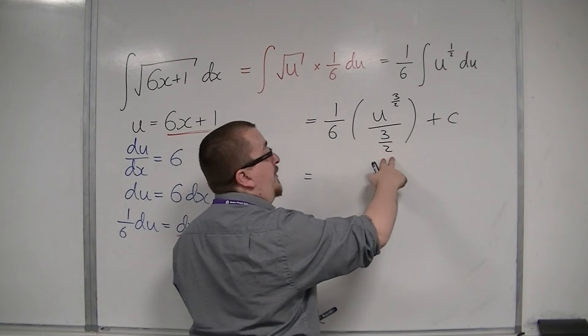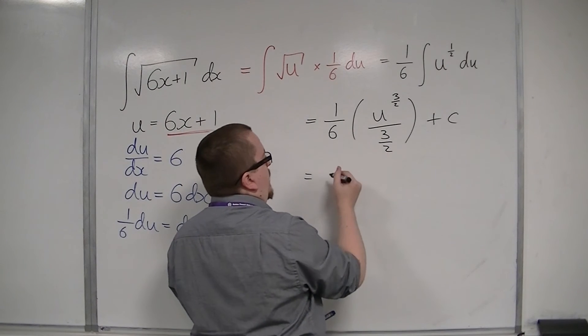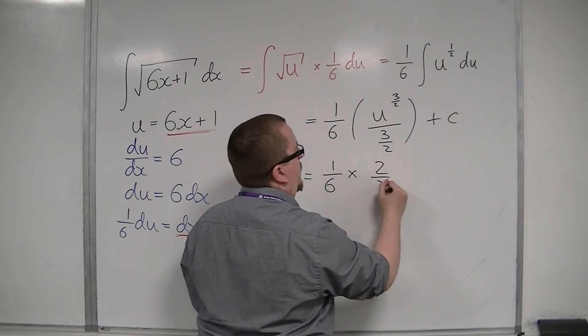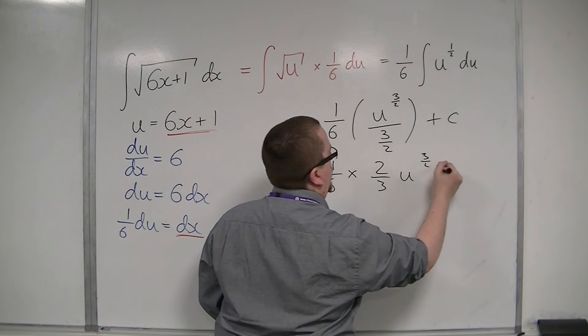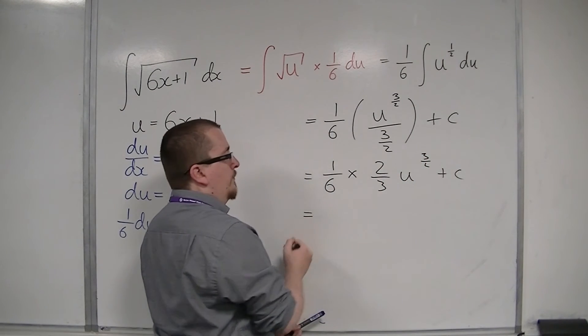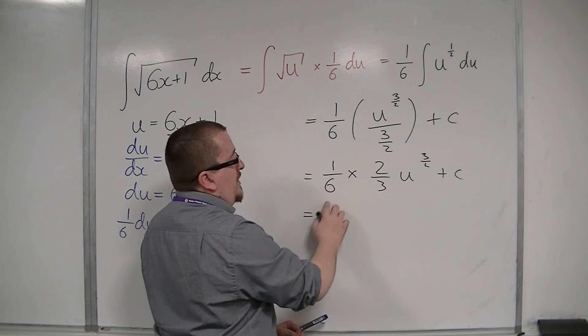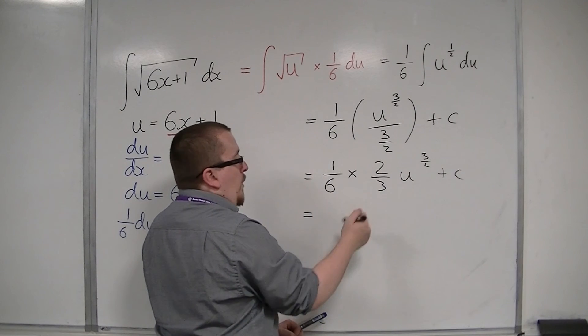So, 1 sixth times 2 thirds, 1 sixth times 2 thirds u to the 3 halves plus c. That's 1 sixth times 2 thirds is 2 eighteenths. So, that's 1 ninth.